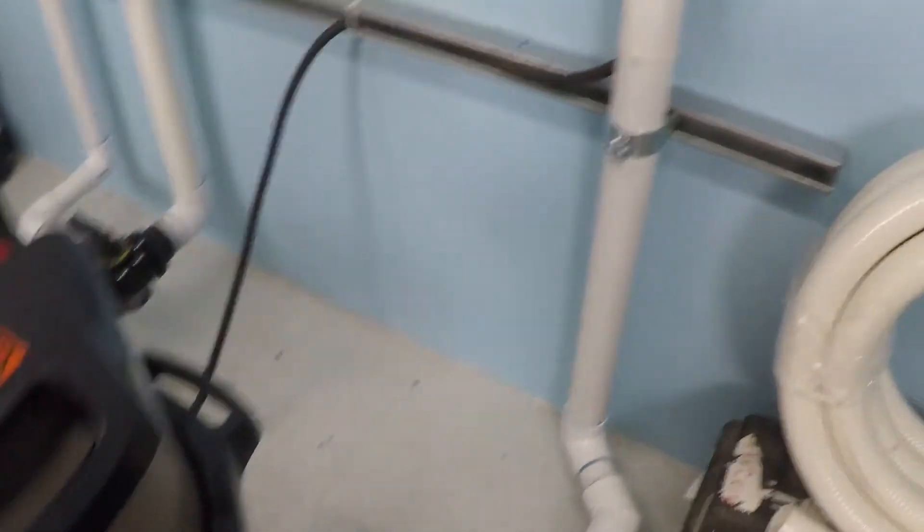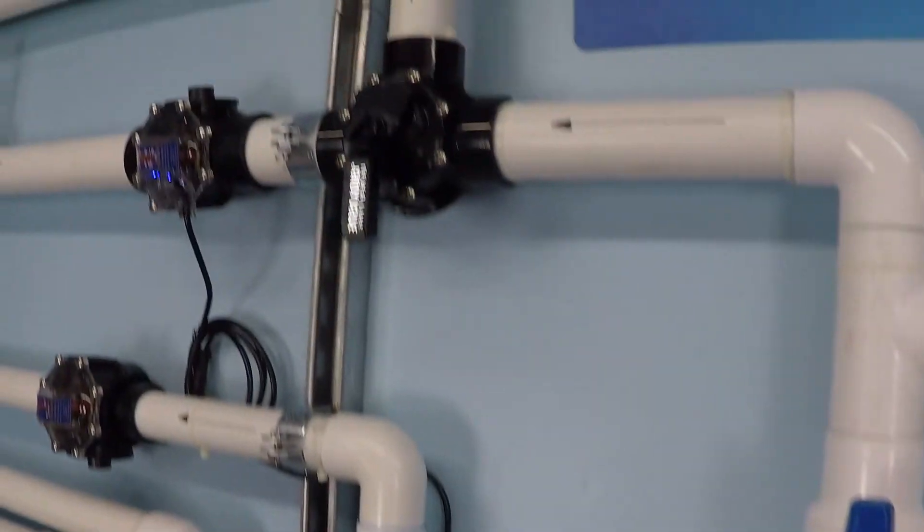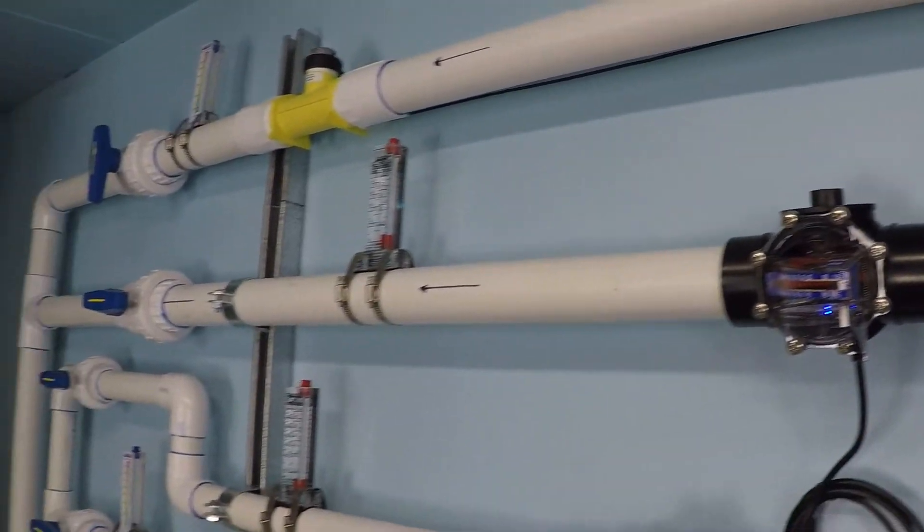And then on the pressure side of this 150 square foot cartridge filter from Hayward, we have a two inch trunk line feeding to a couple of flow meters there.